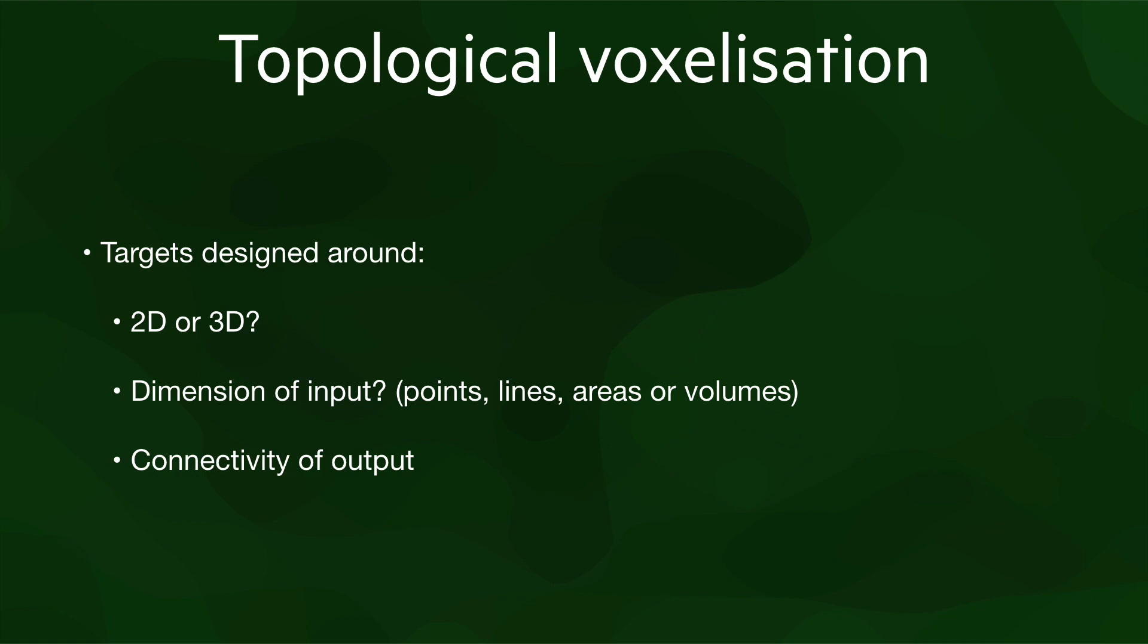The shape of the targets to use depends on a few different factors: the dimension that we are working on, 2D for raster images and 3D for voxel models; the dimension of the input data, that could be 0D points, 1D lines, 2D areas or 3D volumes; and the desired connectivity of the output. In the handout, we describe all possible combinations of these. But let's discuss a few of the most interesting cases.